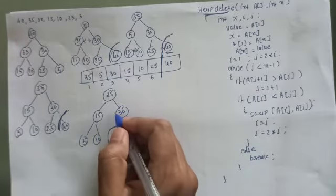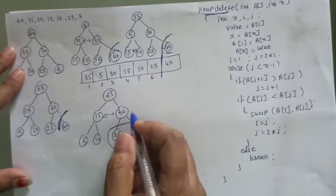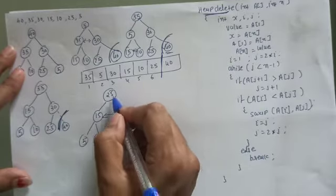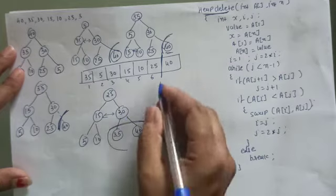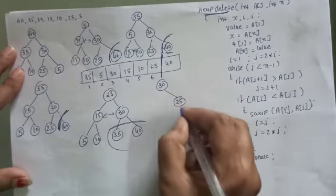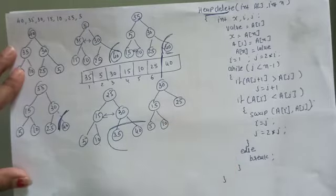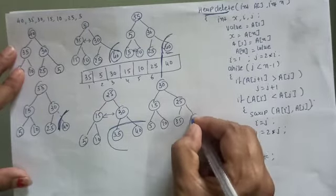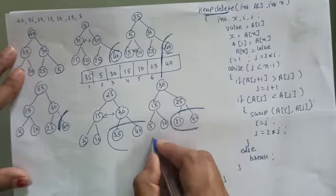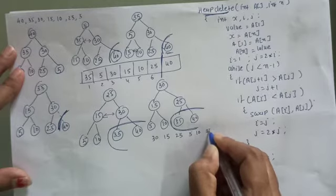Again we perform the heapify procedure: compare left child and right child, which are 15 and 30. Since 30 is greater, 30 is compared with its ancestor. As 25 is smaller than 30, 30 comes to the place of 25, and 25 moves to 30's old position. The corresponding array structure is now: 30, 15, 25, 5, 10, 35, and 40, with 35 and 40 outside the heap size.